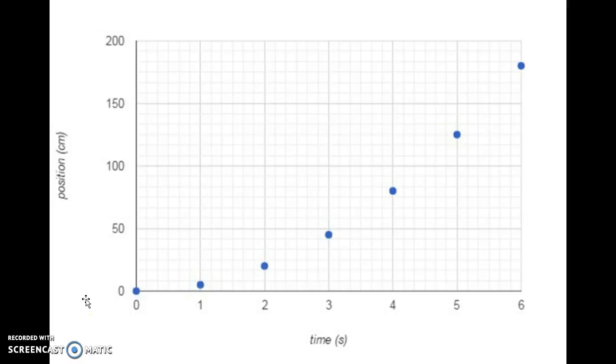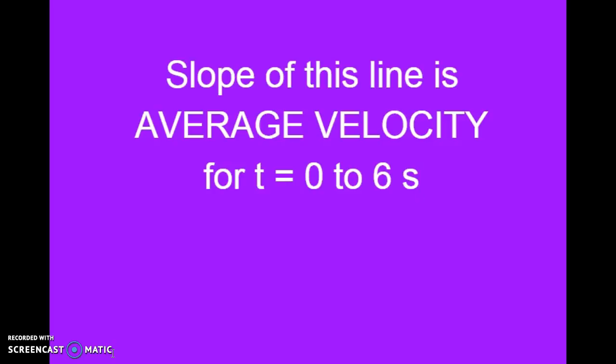A line connecting position at time equals zero to position at time equals six. The slope of this line is the average velocity from time equals zero to six seconds.